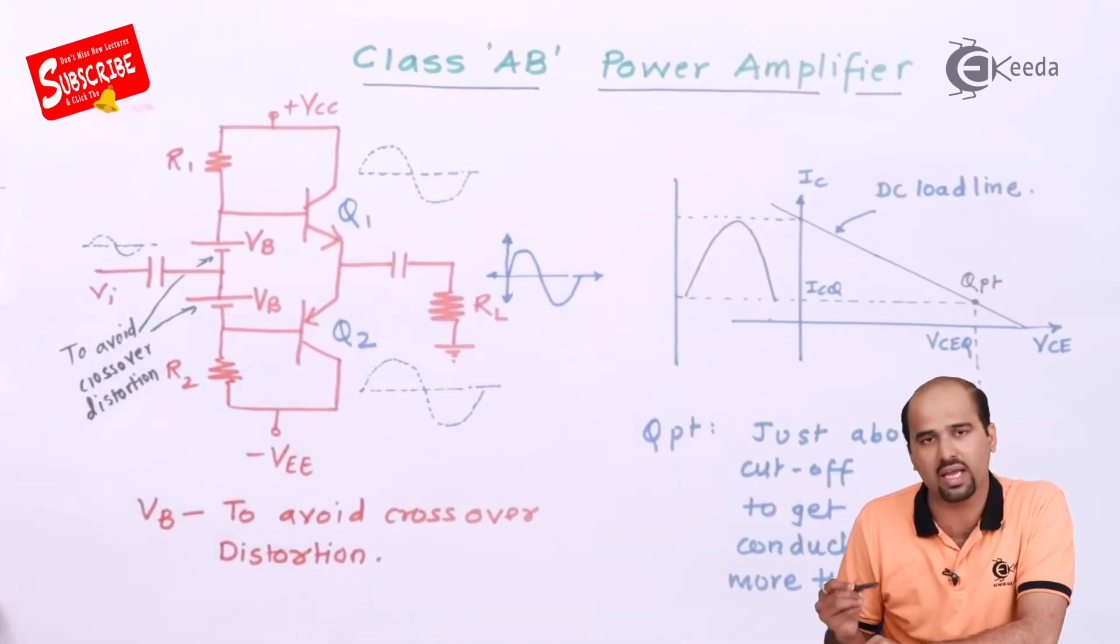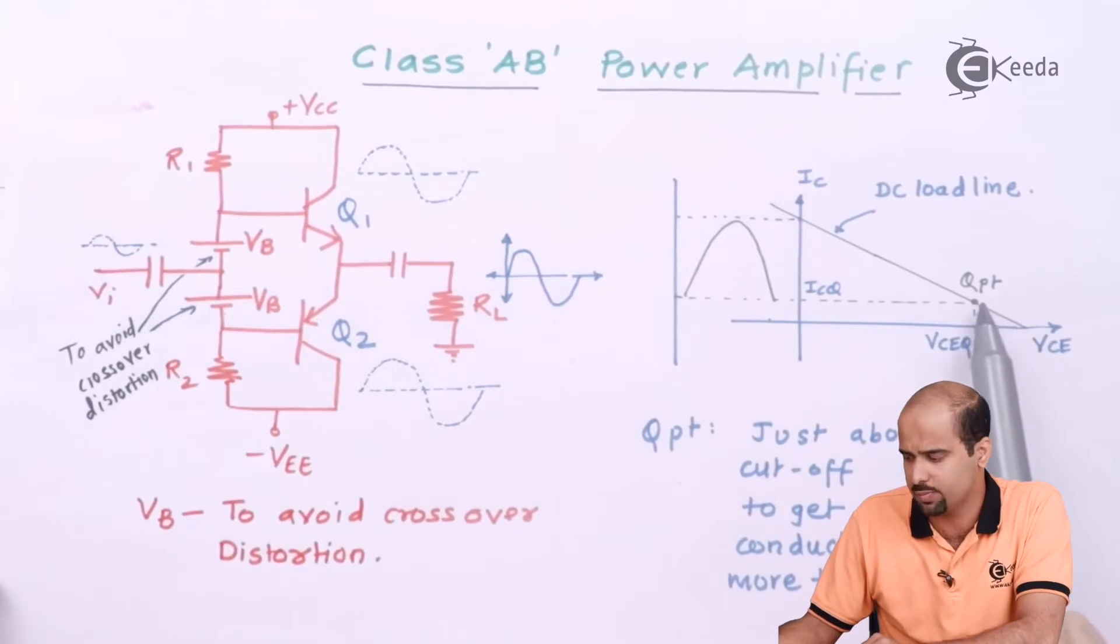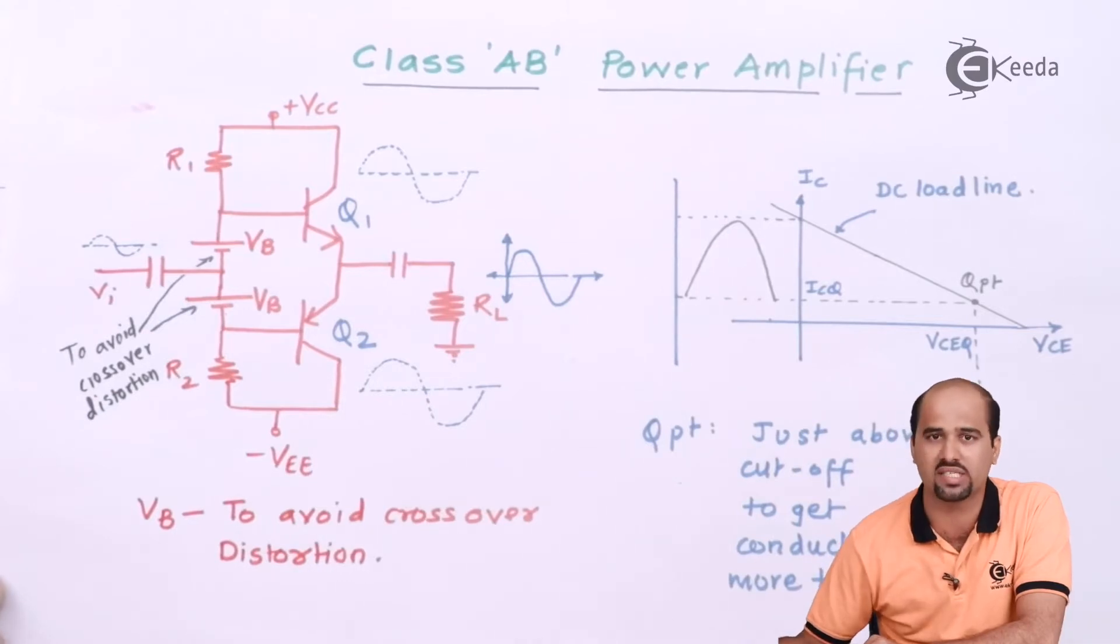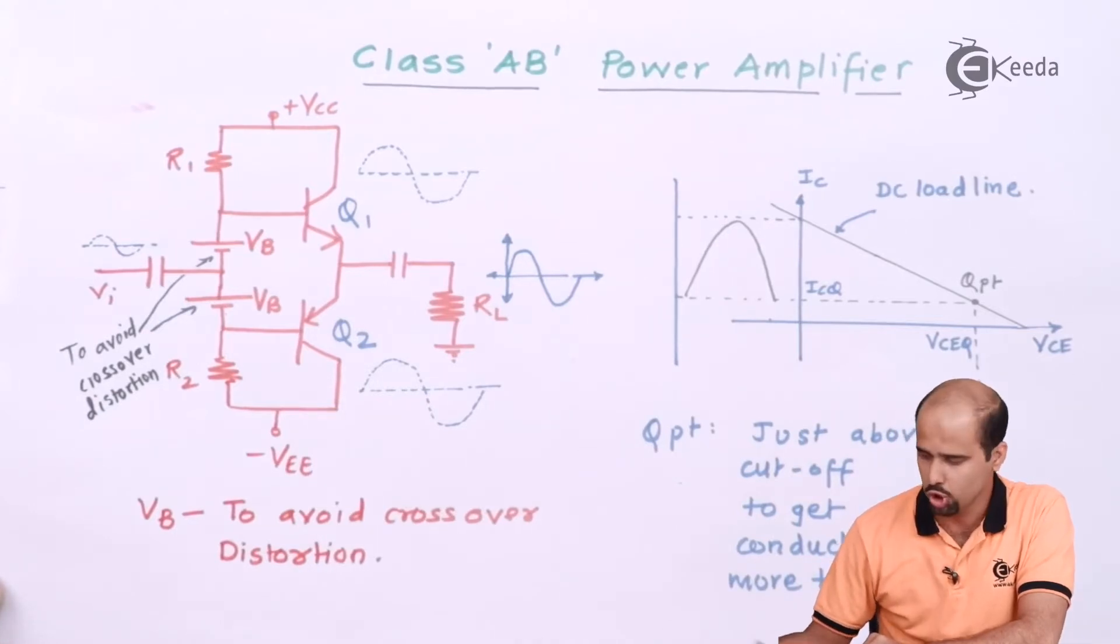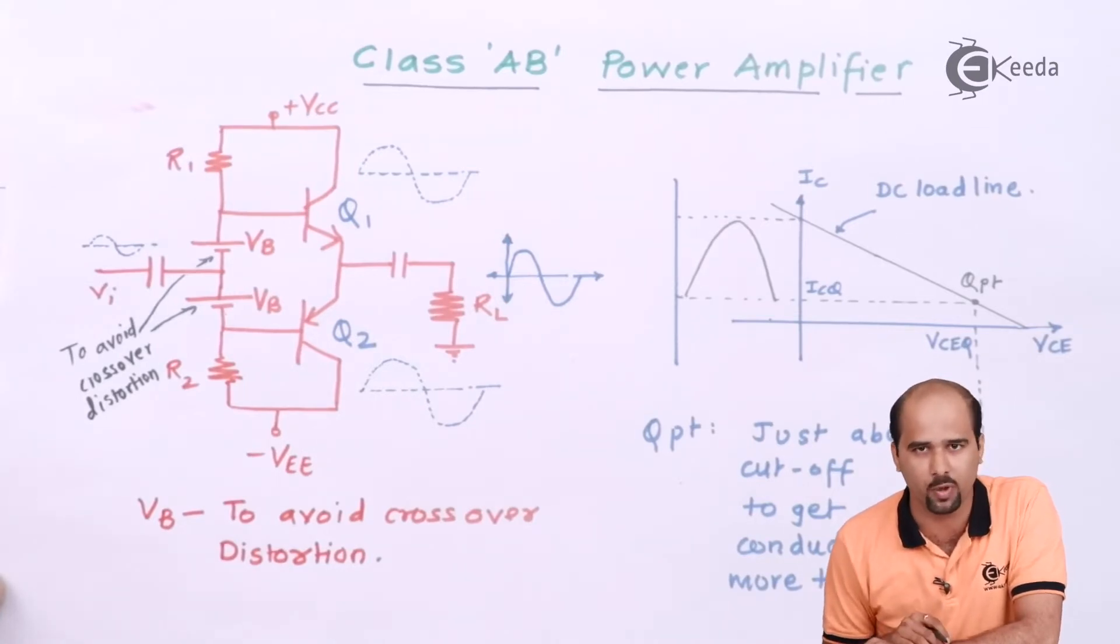With that only I can get this particular Q point just above the cutoff point. So that particular point of Q point is also called as cut-in region. So when I'm talking about class AB power amplifier, your Q point is at cut-in point.